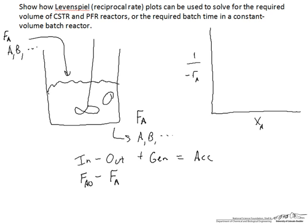We will write this in terms of component A, so we have an inlet flow rate of A, FA0, and an outlet flow rate FA. Our in minus out is FA0 minus FA. Our rate of generation is our rate per unit volume rA times the volume of the reactor. And then at steady state, our accumulation term is equal to zero.